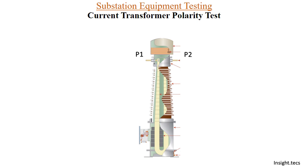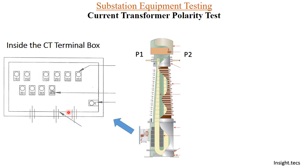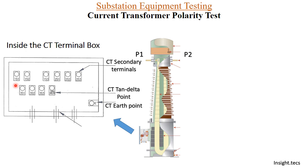We will first understand some basic things about CT as discussed in our previous videos. This is a basic CT structure — the primary winding is shown as P1 and P2. The secondary terminal box contains various CT secondary terminals. Inside it you will find terminals labeled 1S, 2S, and 3S — it has three coils basically.